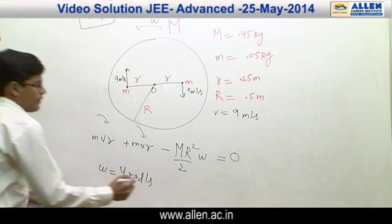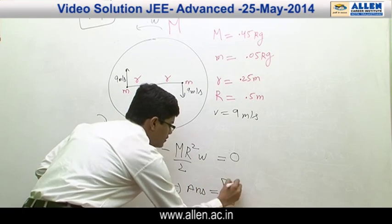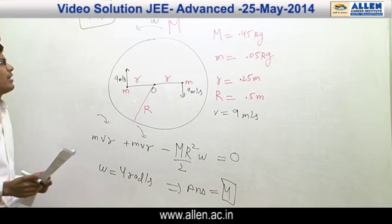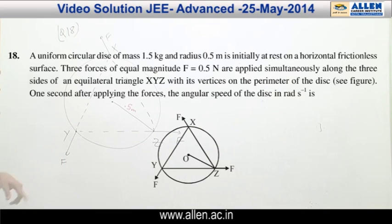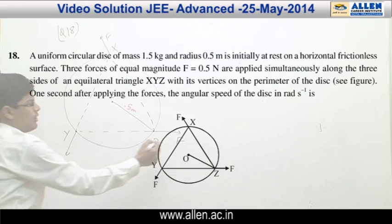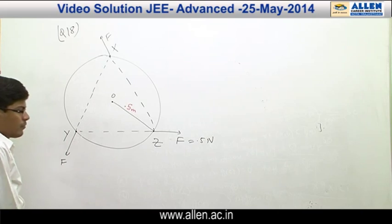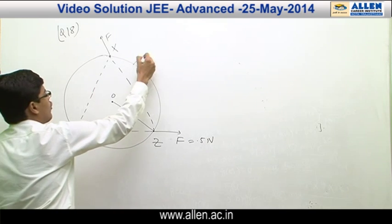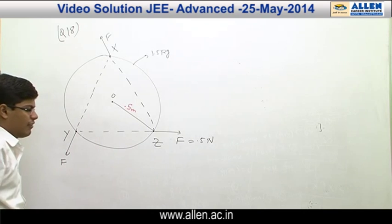We get omega = 4 radian per second. So our answer is 4. Moving to question number 18: on a uniform circular disc, three forces X, Y, Z are acting, all of equal magnitude 0.5 Newton. The disc has mass 1.5 kg and radius 0.5 meter.